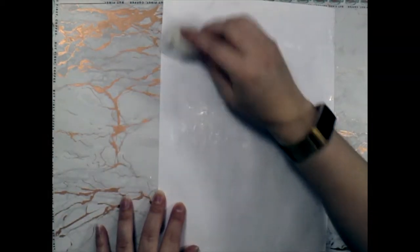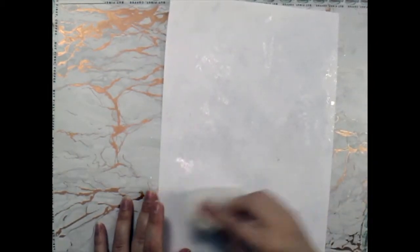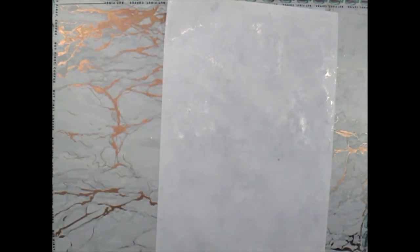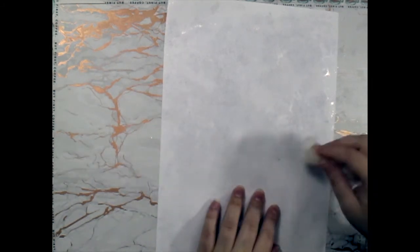After about 30 seconds, I'll start to see the paper change color. It'll start to get these little darker spots on it. What that's telling me is that the water is sinking into the paper. That's what we want.